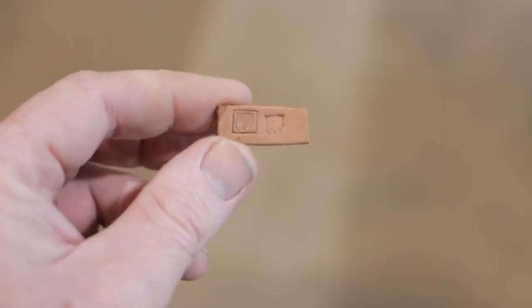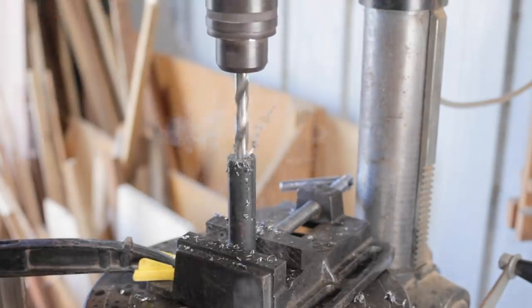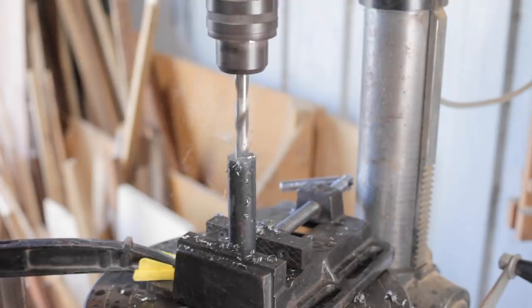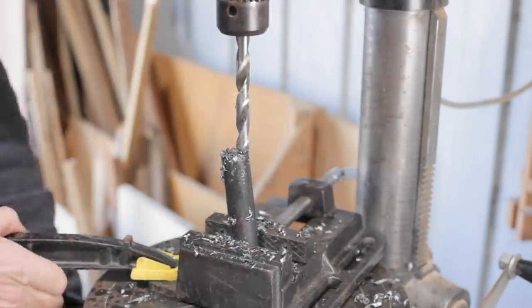Now I'm going to mount it to a piece of one inch mild steel bar. This way it can be used handheld but I'll mainly be using it with my fly press and I've used the one inch bar because that will fit straight into my fly press.